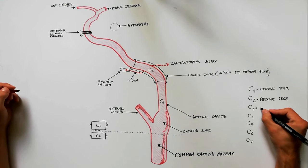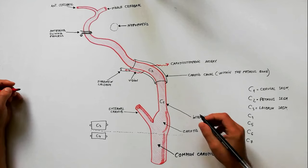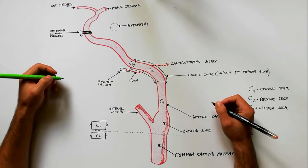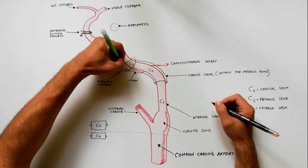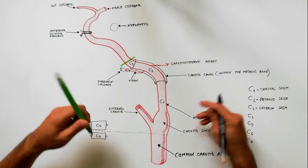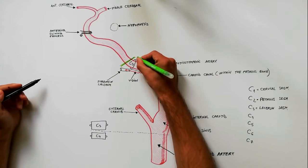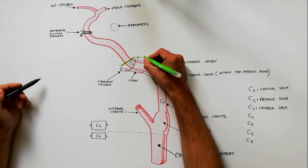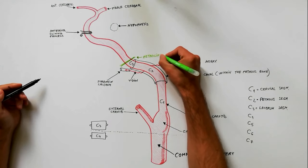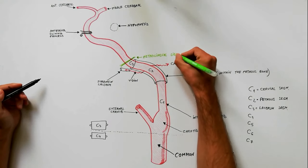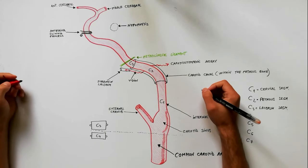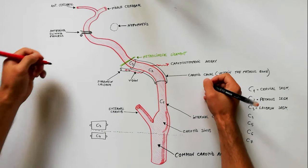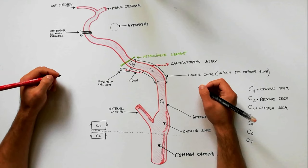The C3 segment is the lacerum segment. This is a short segment that begins above the foramen lacerum and ends at the petrolingual ligament. Keep in mind that the internal carotid artery does not pass through the foramen lacerum, but above it, on its way to the cavernous sinus. The C3 segment has no branches.